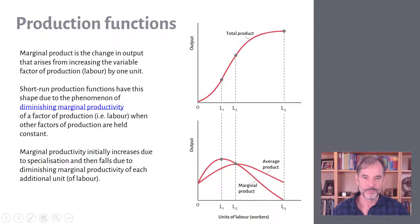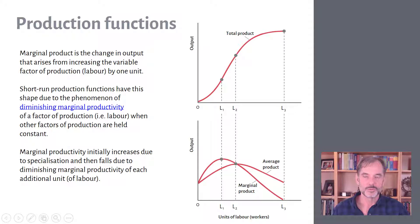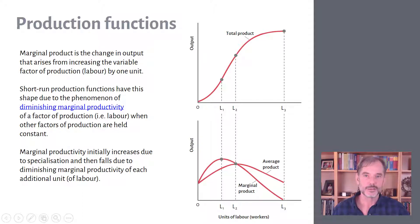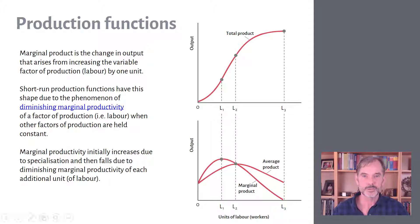When we produce one of these curves, we assume all other factors of production are fixed and we're only varying labor — going from zero workers up to more and more workers along the bottom axis. So what actually happens as we add more labor?